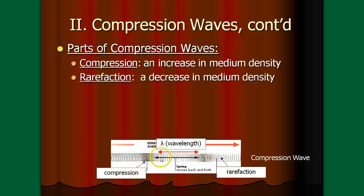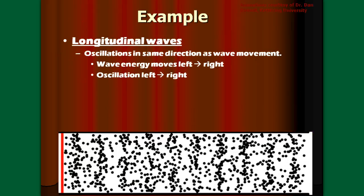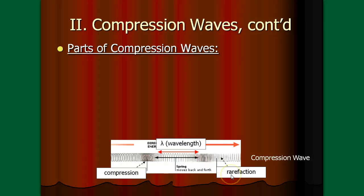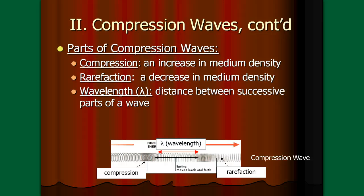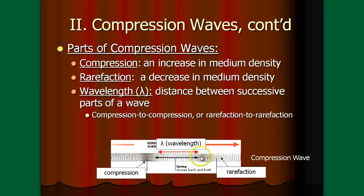At a rarefaction — an area of rarefaction — you have a decrease in medium density. The rings get farther apart in this case. In our previous animation, the areas of rarefaction are the areas in between the darker lines where the particles are farther apart and less densely packed. Those are the two new parts of a compression wave. The wavelength has the same definition: it's the distance between successive parts of a wave, going from compression to compression or from the middle of one rarefaction to the middle of the next.